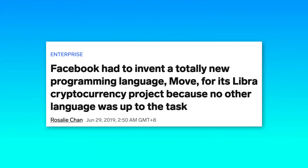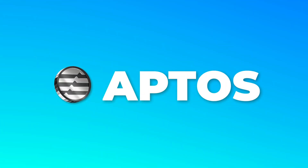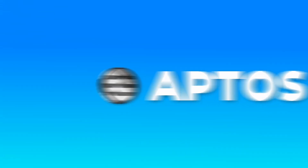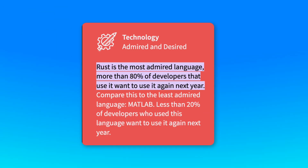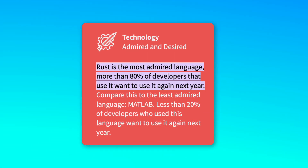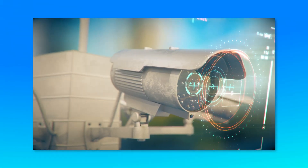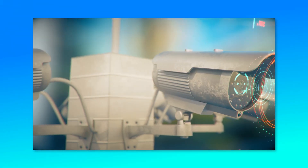Move was first developed by Meta for a blockchain project called Libra, later renamed Diem. Today, most Move smart contracts are written for the Aptos blockchain. Move is based on Rust, which is one of the most loved programming languages according to Stack Overflow. Move was designed with security in mind, making it ideal for smart contracts.